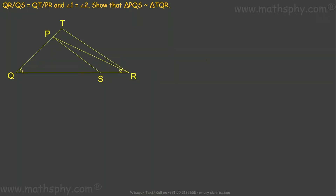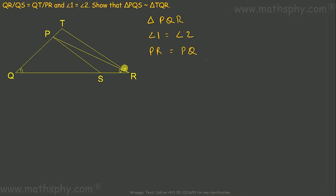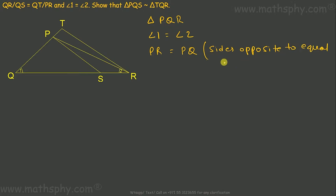It says angle 1 is equal to angle 2. In triangle PQR, when angle 1 is equal to angle 2, PR would be equal to PQ — sides opposite to equal angles. Opposite to angle 1 I have PR, and opposite to angle 2 I have PQ. So I will write: sides opposite to equal angles.